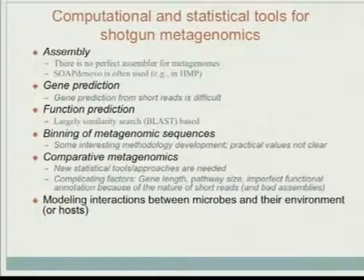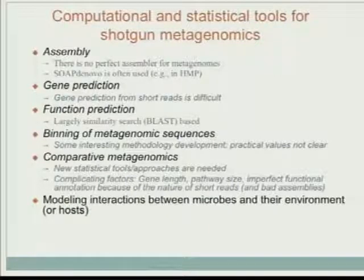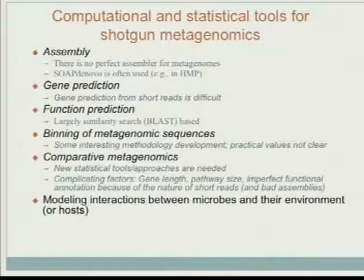BLAST is the method that's often used because it's fast enough, but it's still not fast enough for the HMP. All the similarity search for HMP is done at WashU, and they have to use software that's faster than BLAST - a thousand times faster - from a company. Because they claim they have a supercomputer cluster with thousands of CPUs, and if they run BLAST against the NR database it would take 40 years.